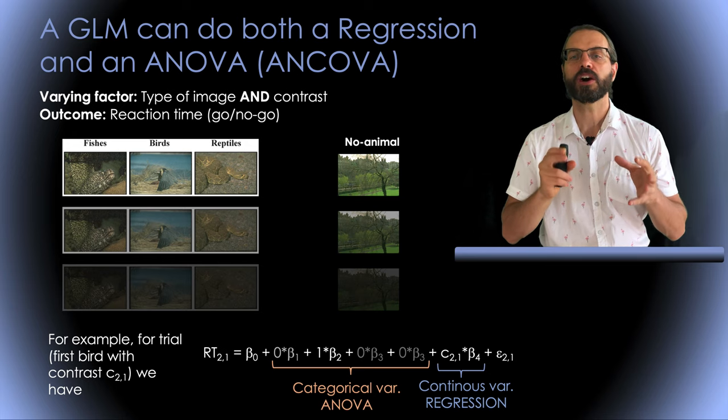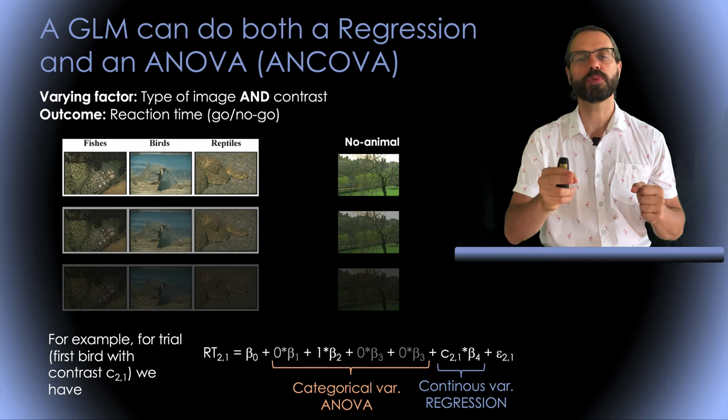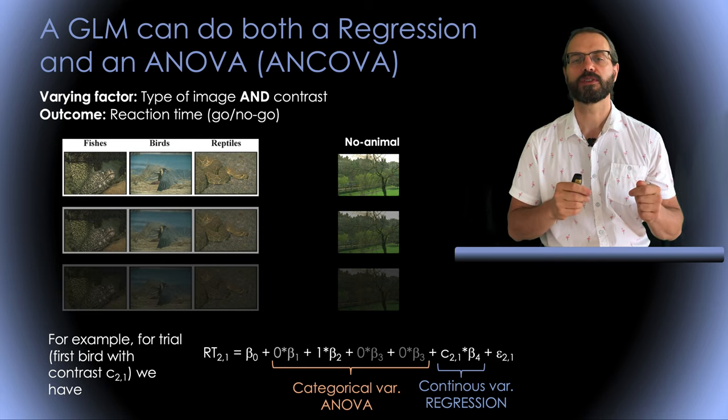As you can see how easy it is to create more complex GLMs and add new variables both continuous for regression and categorical for ANOVA.